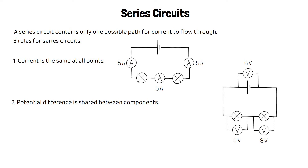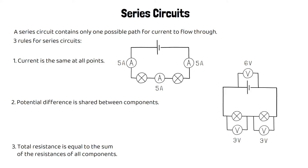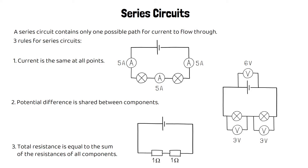The final rule is for resistance. The total resistance of a circuit is equal to the sum of the resistances of all individual components. So if you take a circuit with two resistors and each resistor has a resistance of one ohm, the total resistance of the circuit will be two ohms.